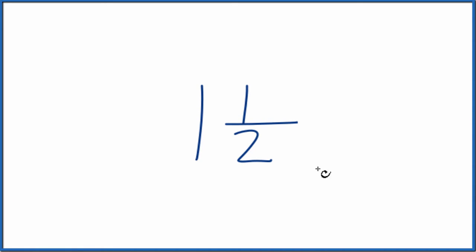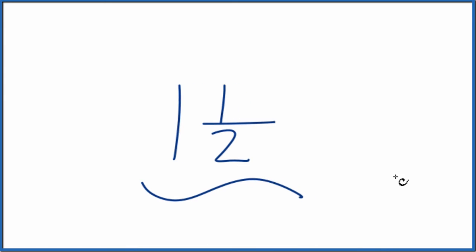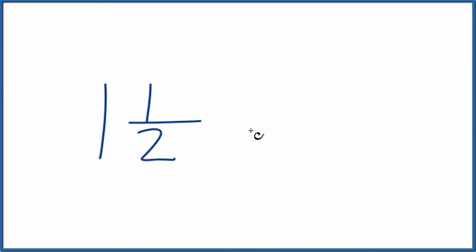Let's write the mixed fraction 1 and 1 half as an improper fraction. When we're talking about improper fractions, we're talking about a fraction where the numerator is larger than the denominator.